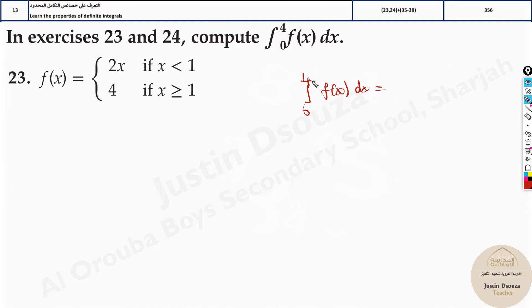How do we split it up? You can do it as 0 to 1 is one particular function, so you can take 0 to 1 as 2x dx. Then from 1 to 4 we will consider the next function because this is valid for anything greater than or equal to 1. So 1 to 4 is 4 dx.